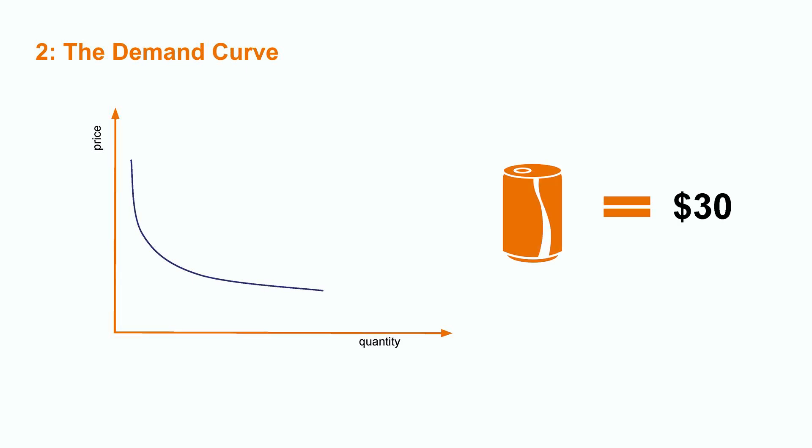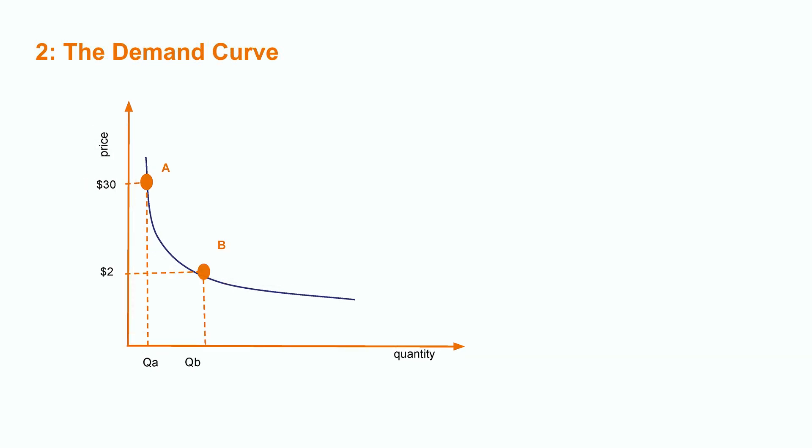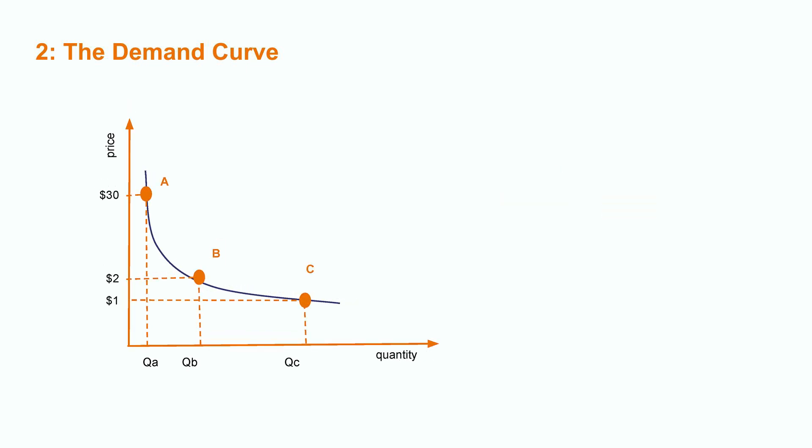Let's imagine you are thirsty, walking on the street, and you want to buy a soda. You enter the first shop and find the soda you want, but it costs $30. That seems like a lot — the curve illustrates that at $30, hardly anyone will buy it. So you walk to the next shop, and the same soda is worth $2. Point B on the curve reflects that at $2, more people will buy soda. But before you reach the counter, you see from across the street that an auto shop has the same soda for $1. You leave the $2 soda and cross over. At point C, with soda at half the price, the quantity demanded will be significantly higher.